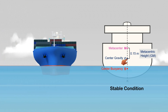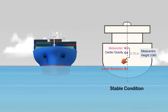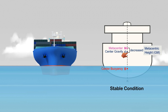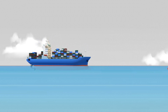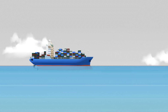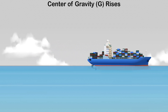But there are instances where the center of gravity rises, causing a decrease in the metacentric height, or even rises above the metacenter, resulting in a negative metacentric height, which leads to the ship becoming unstable. In this video, let's discuss several reasons why a ship's center of gravity rises.